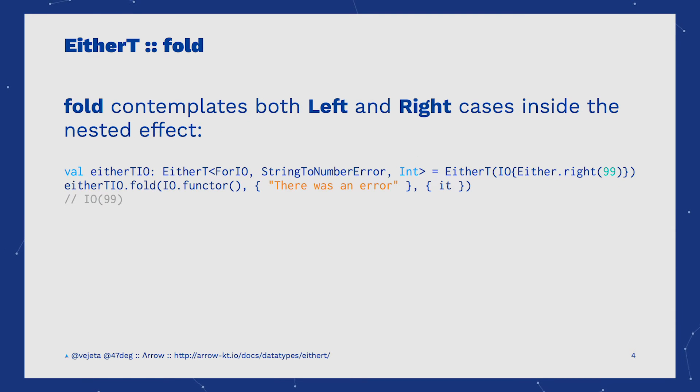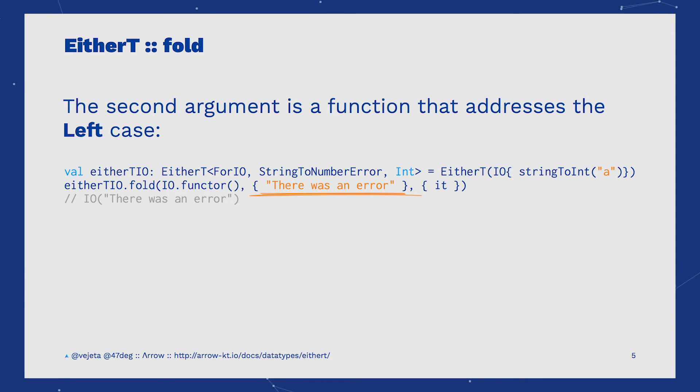Now we will see how we can operate with EtherT. In the first line we see how an EtherT of an I.O. Effect is defined, and then we can use Fold to operate directly with the nested Either values. The second argument is a function for operating with the left case of the nested Either. In this example, we will return an I.O. of there was an error. Since this Either is a left, we will return an I.O. of there was an error.